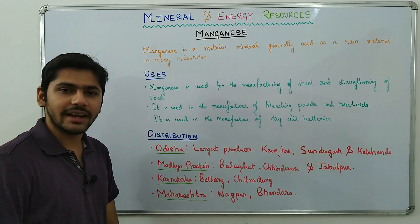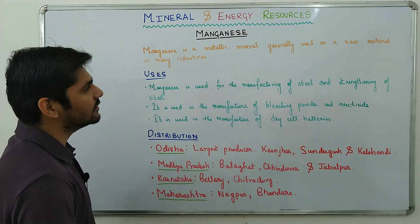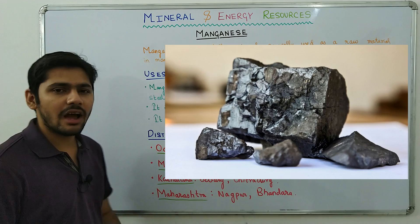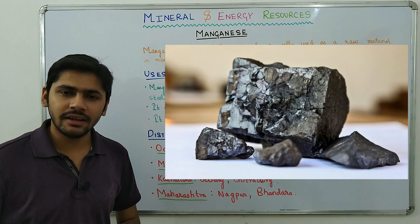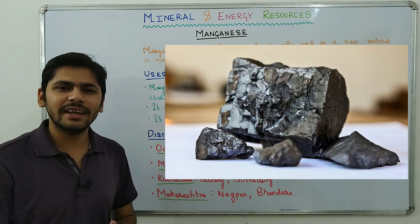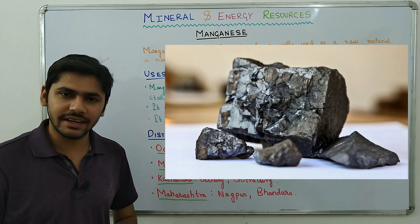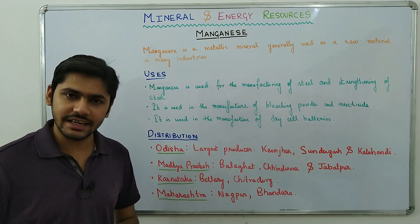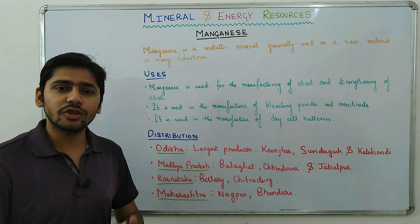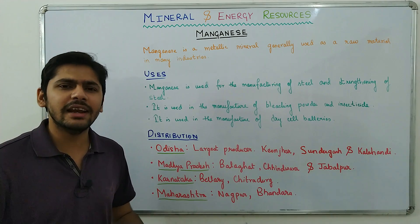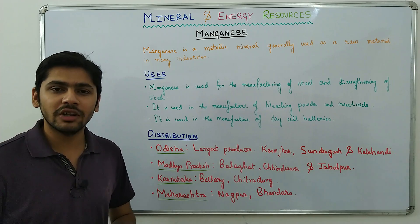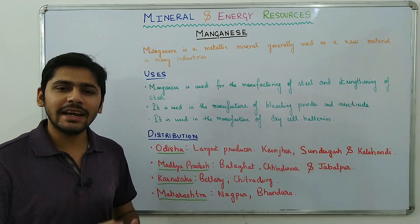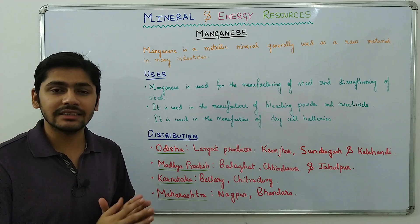Moving on to manganese — a metallic mineral generally used as a raw material in many industries. Manganese is used for the production of stainless steel, many electronic components, and dry cell batteries. Many other industries also use manganese as a raw material.